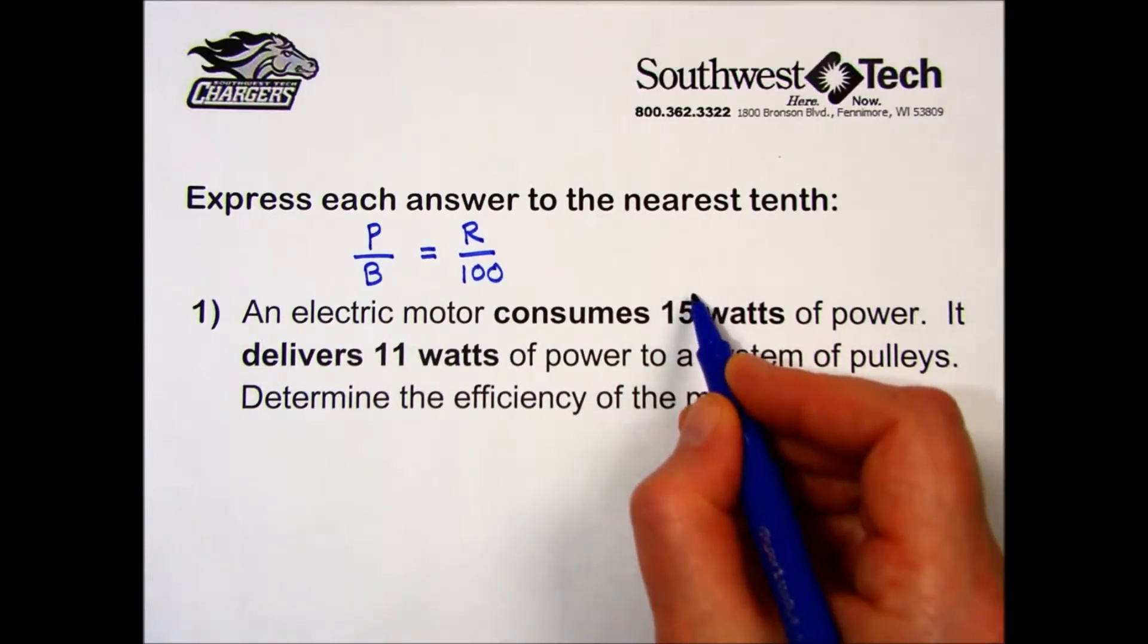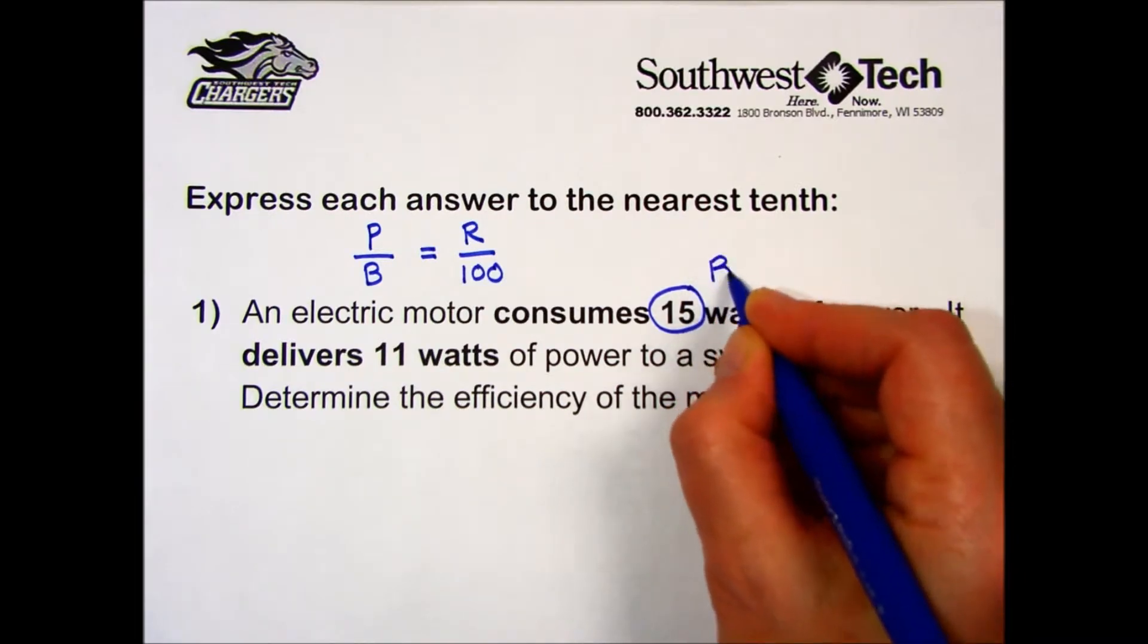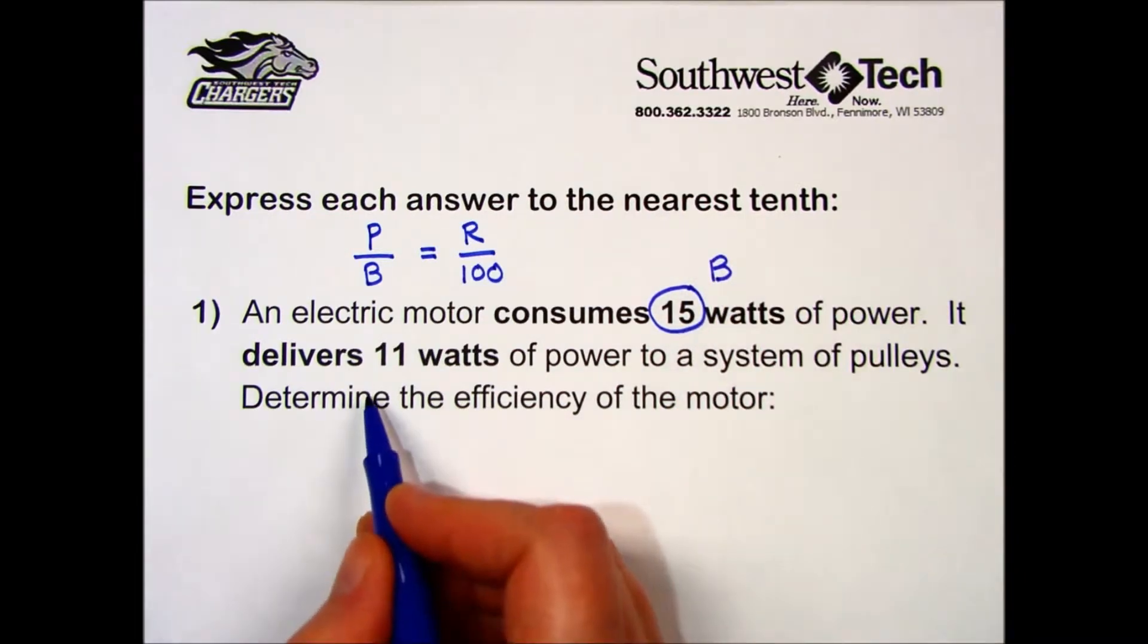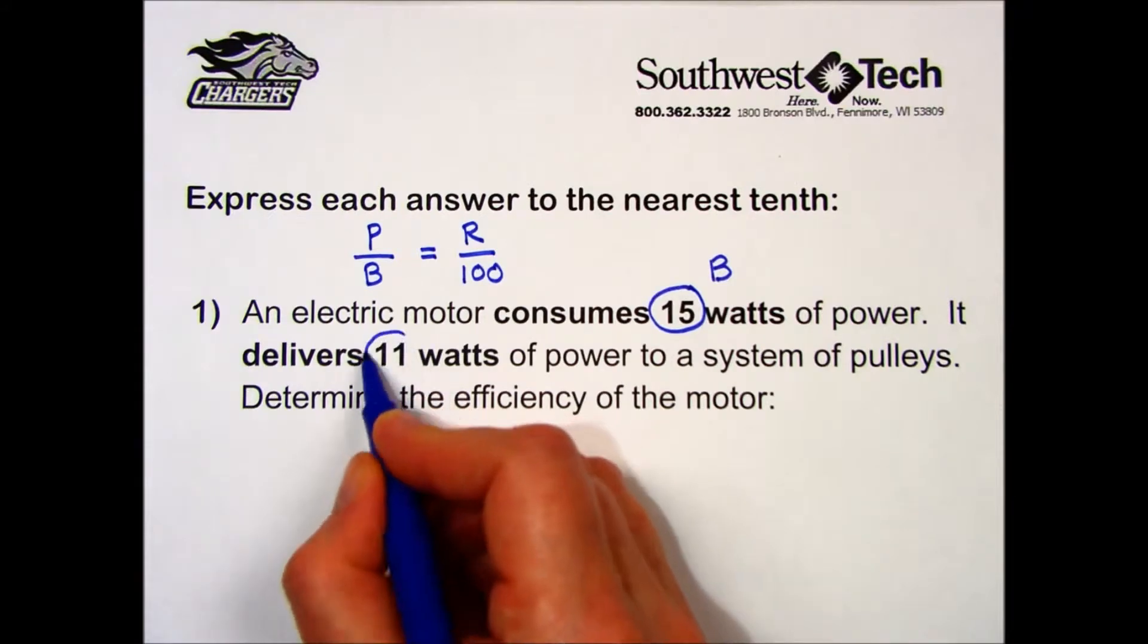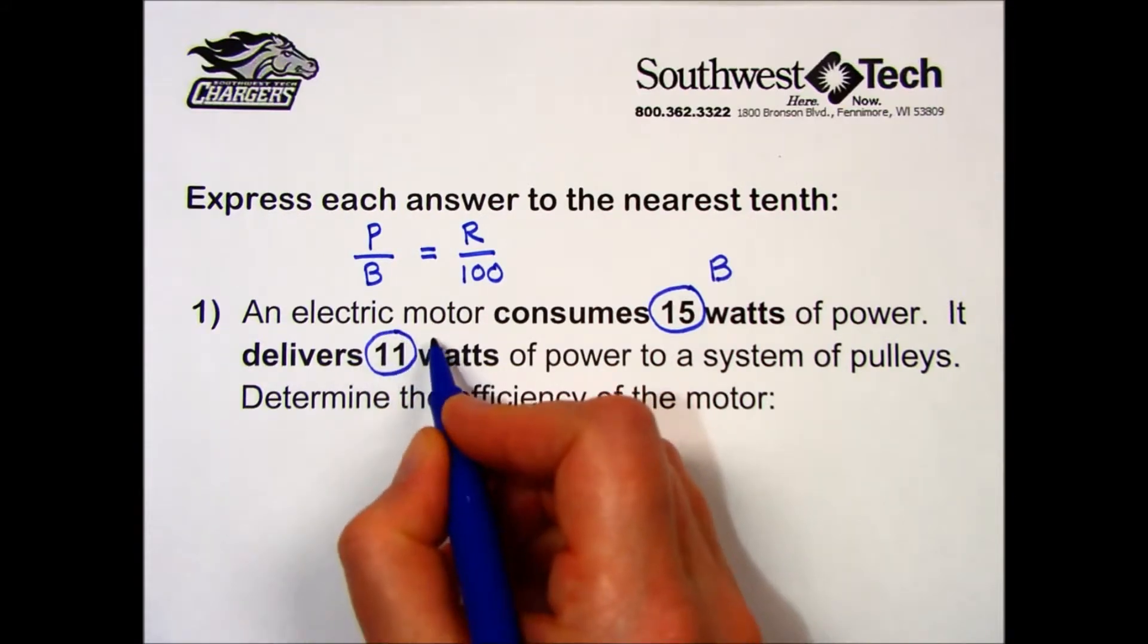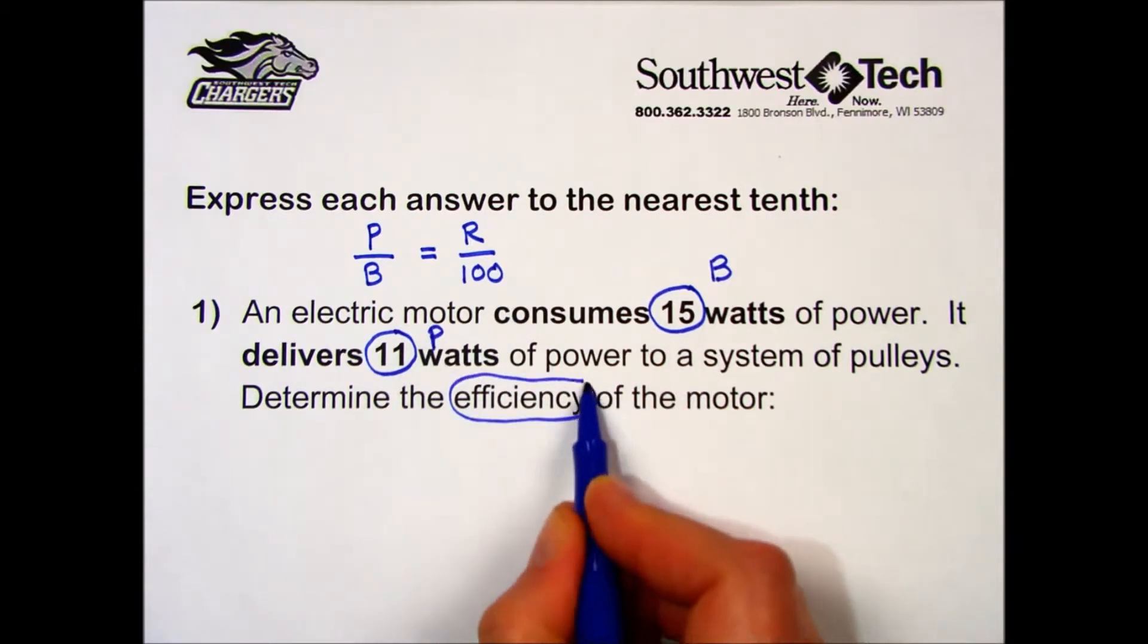The input in this case is the 15 watts, so that will be our base. The output is what this motor is delivering, 11 watts. That will be our part. And we're looking for the rate of efficiency.